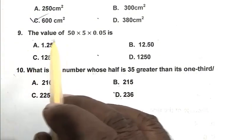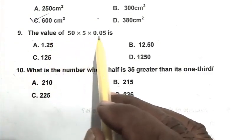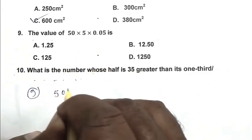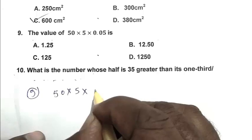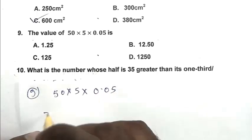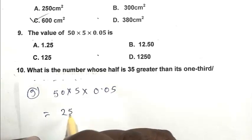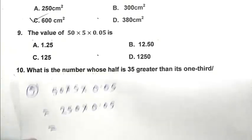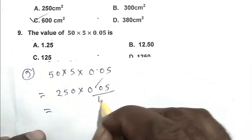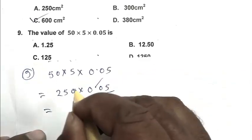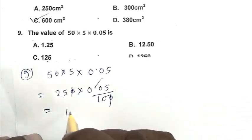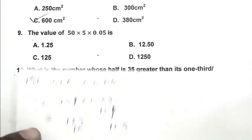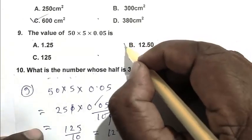Question number 9: The value of 50 × 5 × 0.05 is. We write the expression: 50 × 5 × 0.05 = 250 × 0.05. Eliminating the decimal point, we get 125/10, that is 12.5. So B is the right answer.